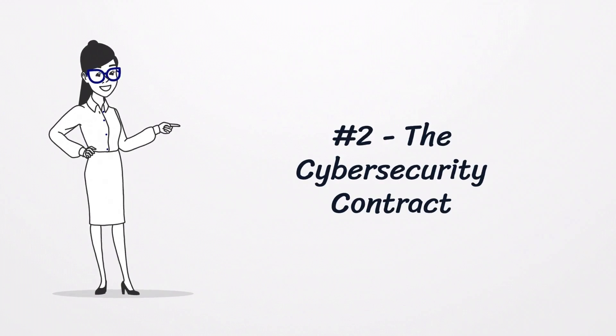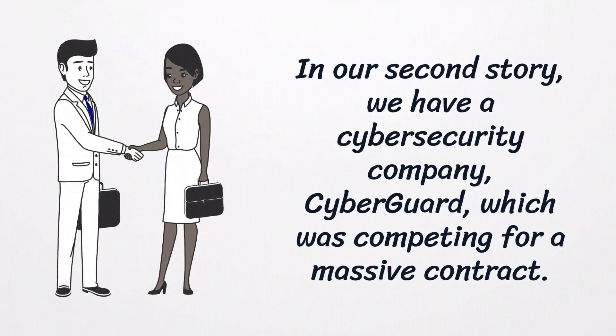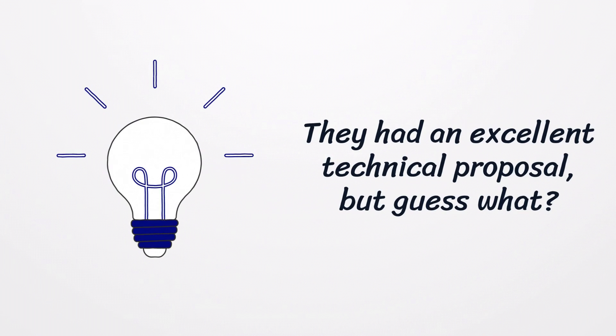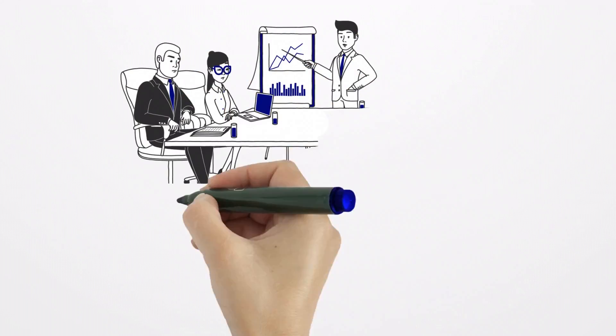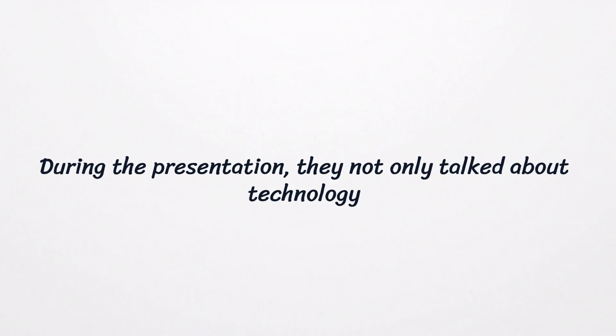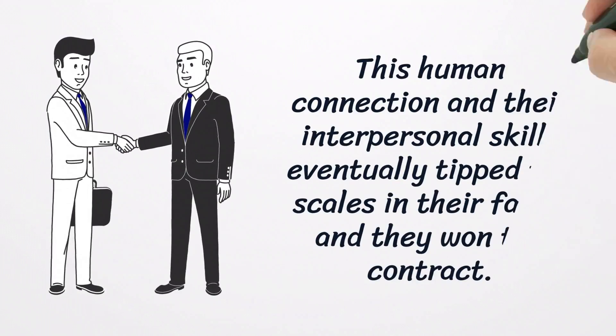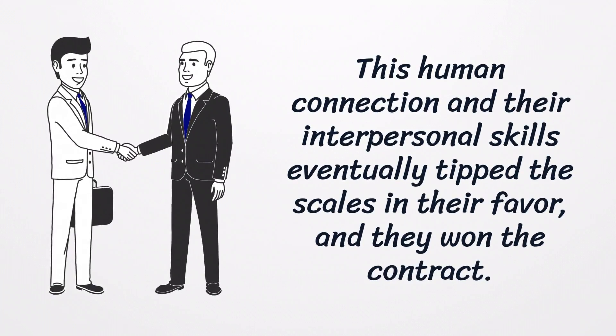Second, The Cyber Security Contract. In our second story, we have a cybersecurity company, CyberGuard, which was competing for a massive contract. They had an excellent technical proposal, but guess what? So did their competitors. However, what set CyberGuard apart was their team's ability to connect and build relationships with the client. During the presentation, they not only talked about the technology but also addressed the client's concerns, shared their company's values, and engaged in genuine conversation. This human connection and their interpersonal skills eventually tipped the scales in their favor, and they won the contract.